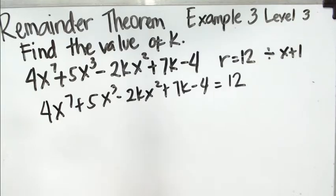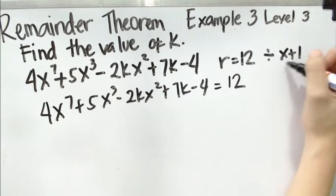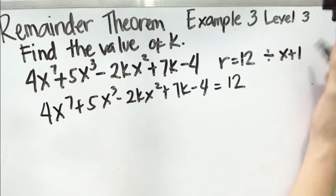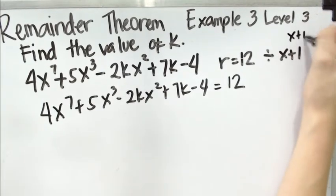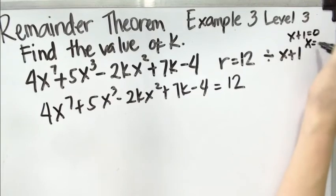Next thing we do is to equate the divisor. x plus 1, equating it, we have x plus 1 equals 0, and x equals negative 1.